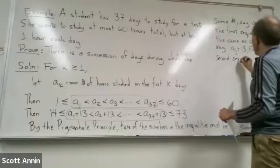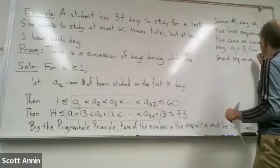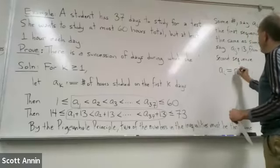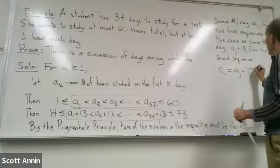This is going to be the key point. In other words, a_i is equal to a_j plus 13.